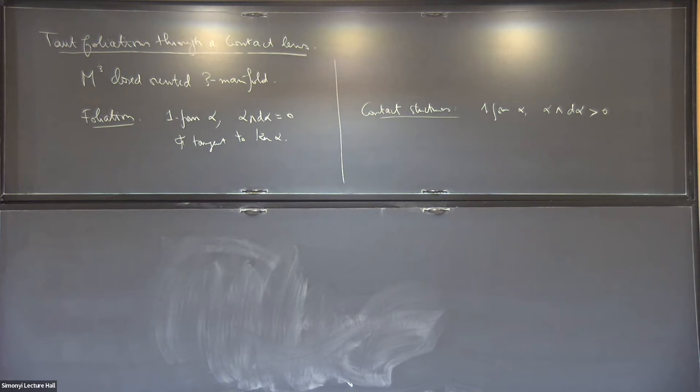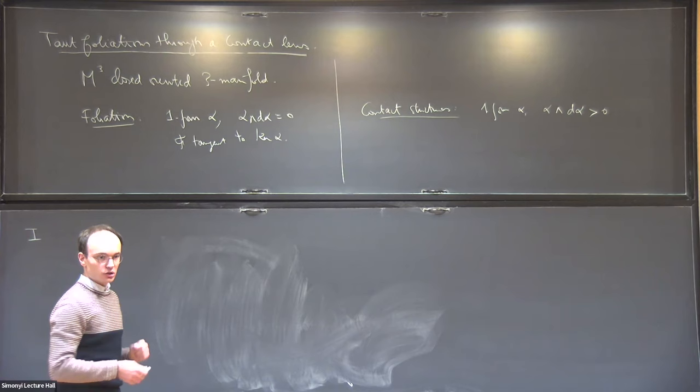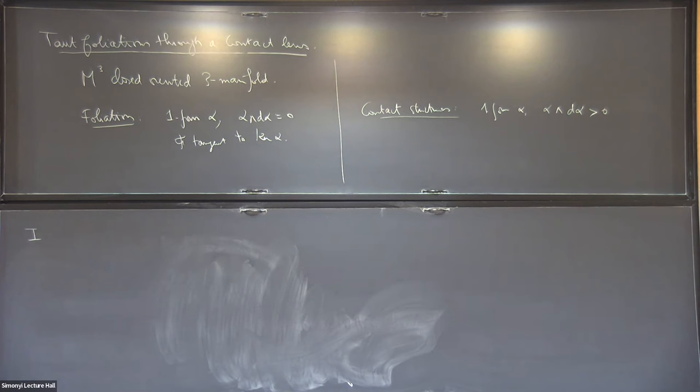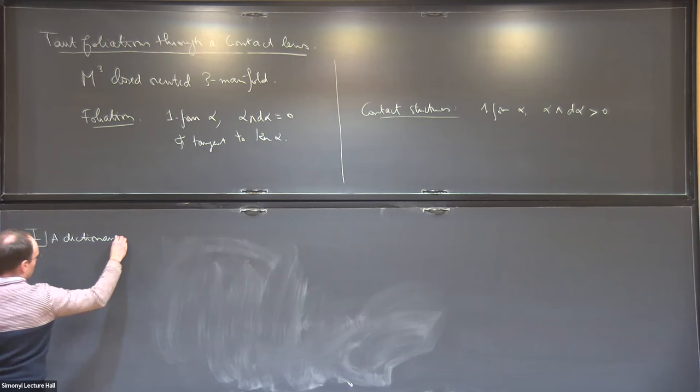The first part of my talk is essentially going to review what is known, especially on how to go from foliations to contact structures. I would like to present some kind of dictionary between the two worlds — lots of adjectives you can put on foliations: ribless, taut, etc., and also adjectives on contact structures: overtwisted, tight, universally tight, etc. I want to make a parallel between these adjectives.